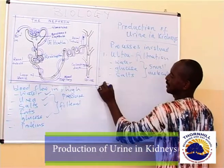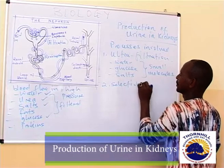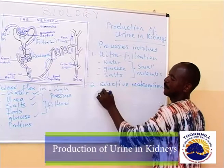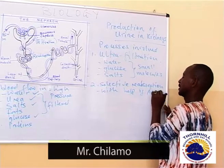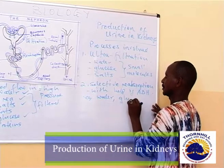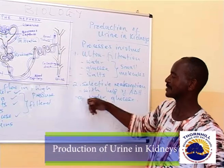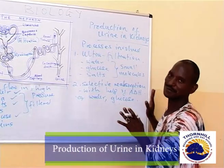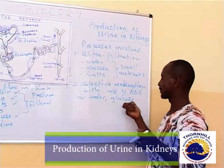We have two processes which take place in urine production: ultrafiltration and selective reabsorption. What is reabsorbed is what the body wants, with the help of anti-diuretic hormone — for example, water and glucose. This is why glucose is not supposed to be part of urine in a healthy person, unless a person is diabetic, where insulin in the body is not regulated and glucose is not balanced. Then glucose will be found in urine, and the person who goes for a urine test will test for the presence of glucose.